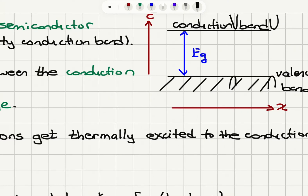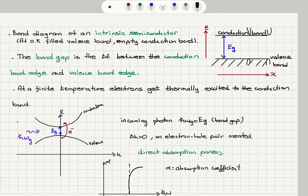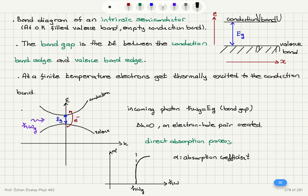We can see a band gap here, which corresponds to the energy difference between the conduction band and valence band edges. That band gap arises from standing wave solutions at the Brillouin zone boundary. The band gap is the energy difference between the conduction band edge and valence band edge, and at a finite temperature electrons get thermally excited to the conduction band.